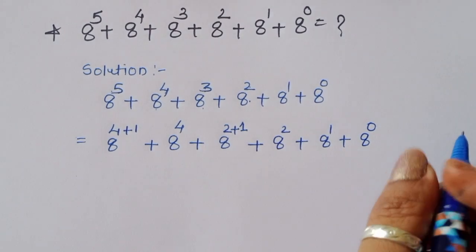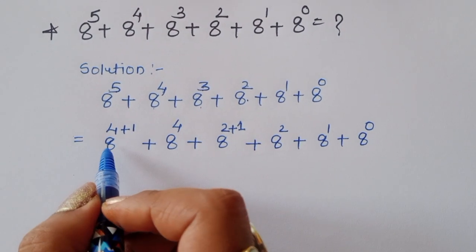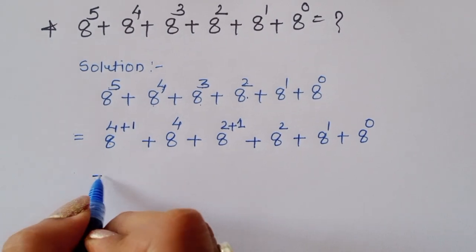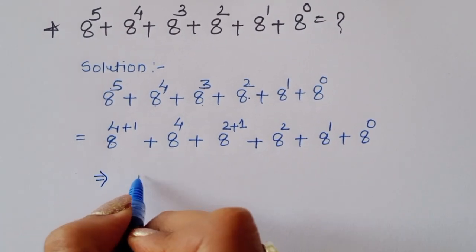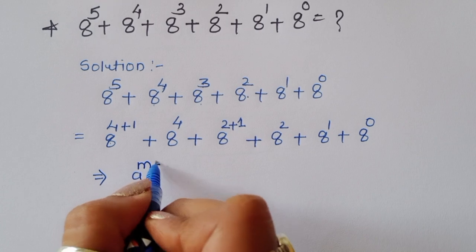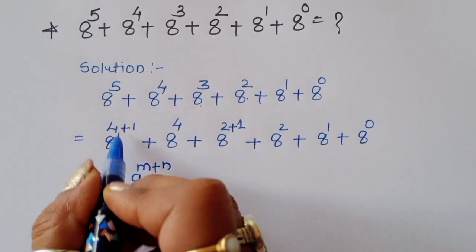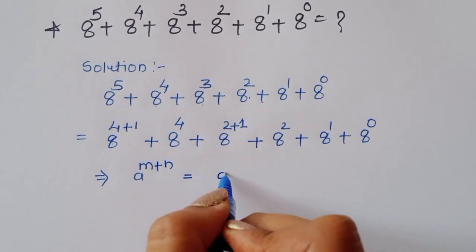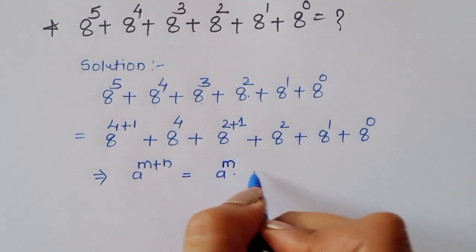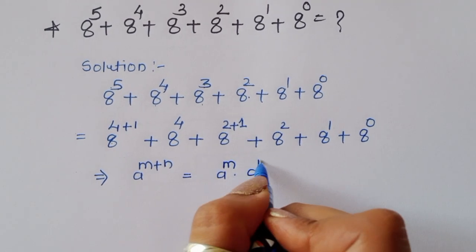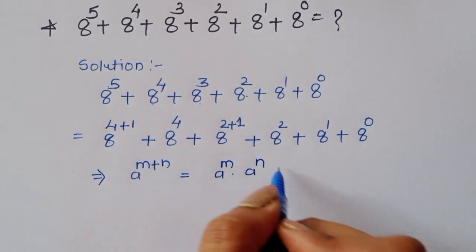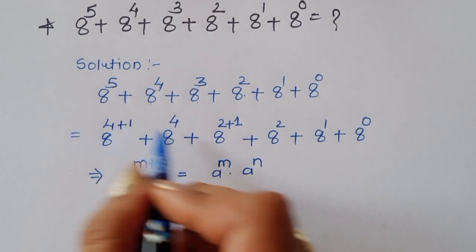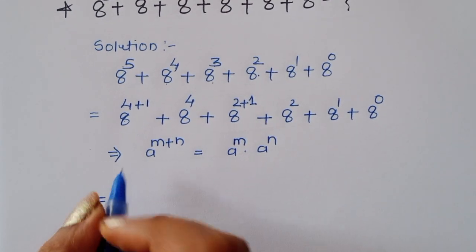Now, there is a formula: a power (m plus n). If a power (m plus n) is given, we can write this as a power m times a power n. This is the formula, and we can use it here.